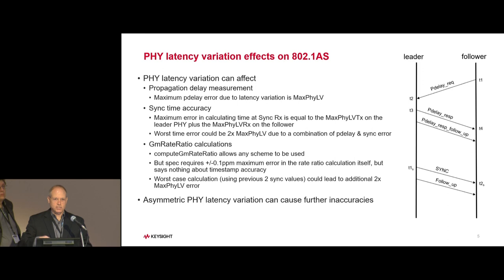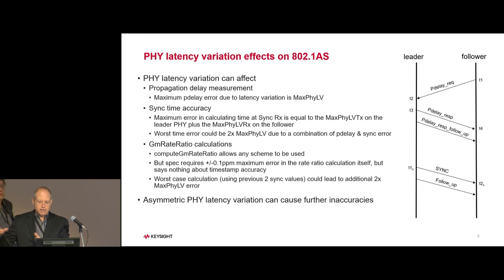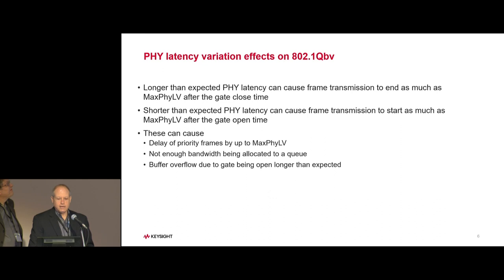802.1AS allows averaging or other algorithms to potentially compensate, but there's no standard requirement for how much averaging must be applied — it is left to the implementation. Asymmetric PHY latency variation can also cause further inaccuracies, but we're not going to dig into that here.